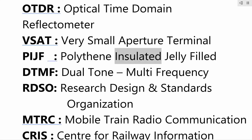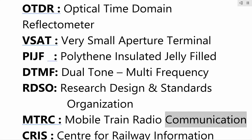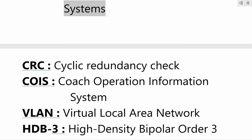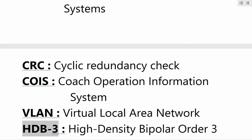polythene insulated jelly filled; DTMF — dual tone multi-frequency; RDSO — research design and standards organization; MTRC — mobile train radio communication; CRIS — center for railway information systems; CRC — cyclic redundancy check; COIS — coach operation information system; VLAN — virtual local area network; HDB3 —